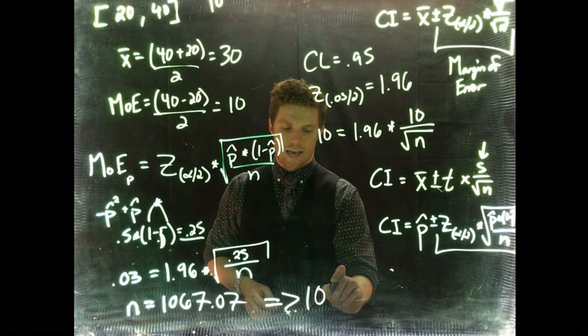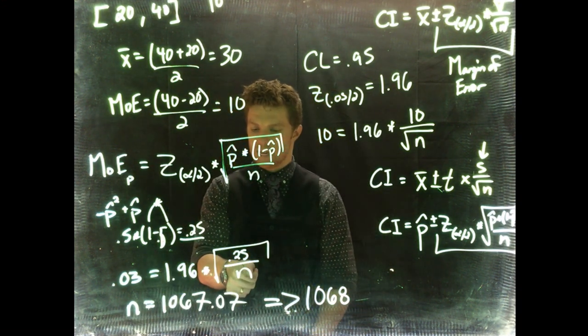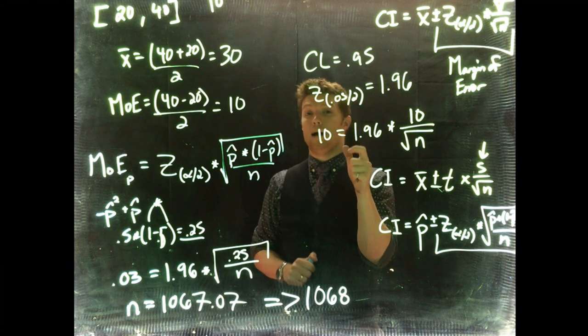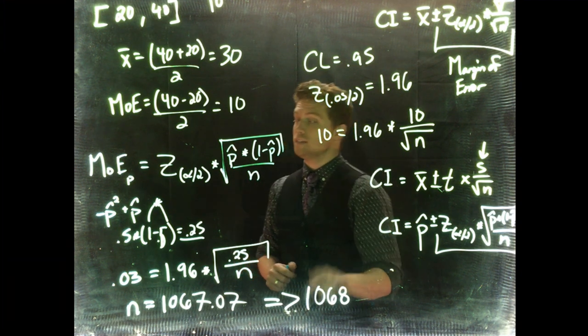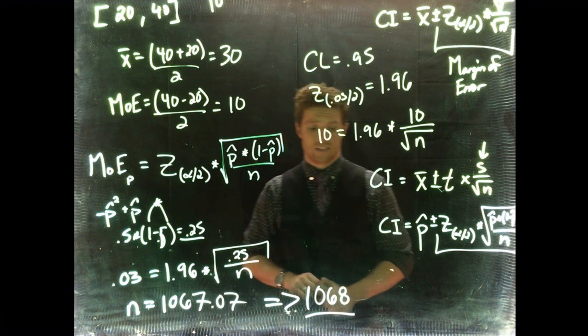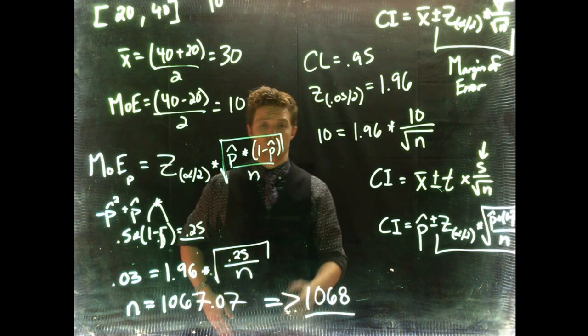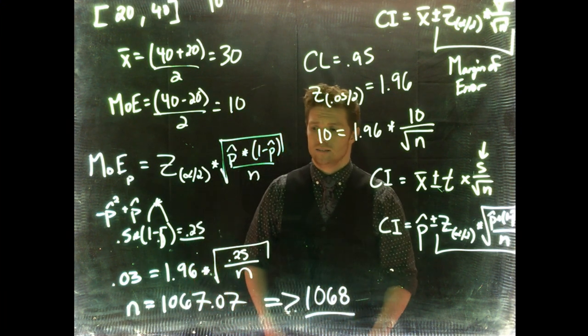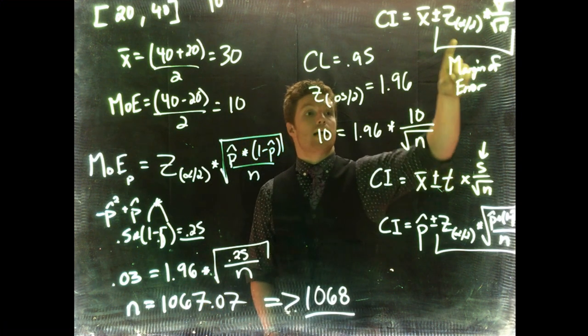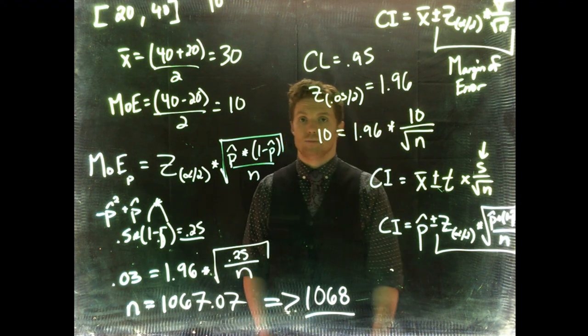What would happen is if we went backwards—if we plugged in 1067 here and solved for margin of error—if we use 1067, our value is just a little bit above 3% for the margin of error. But if we use 1068, it's just a little bit below. If you notice, this is why a whole bunch of polls in the United States are run at a sample size of a thousand. The reason is because if you run it at a thousand, you're almost guaranteed to have right around a 3% margin of error. This holds true too if we're calculating the sample for the sample mean—once you calculate n, you always round up. So hope that helps out.